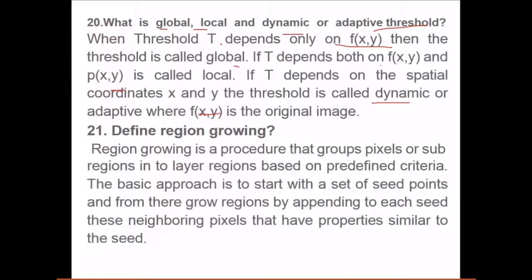Define region growing. What is actually region growing? Region growing is a procedure that groups pixels or sub-regions into larger regions based on some predefined criteria. The basic approach is to start with a set of seed points, the initial points, and from there grow regions by appending to each seed their neighboring pixels that have properties similar to the seed. This is region growing.